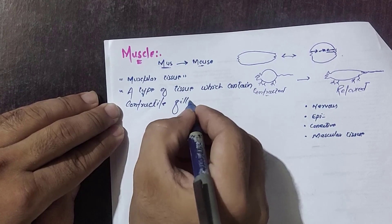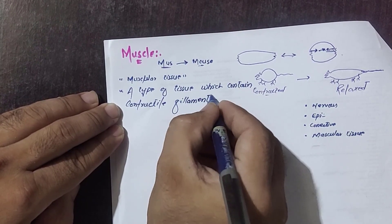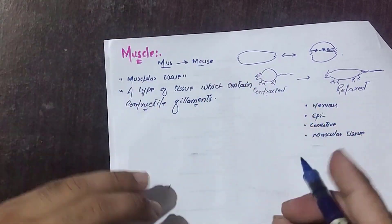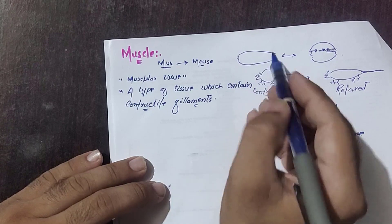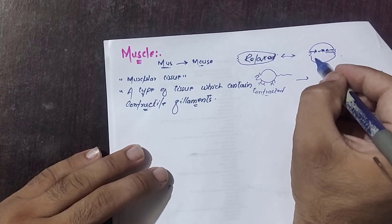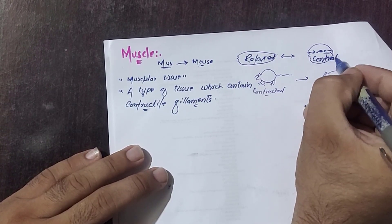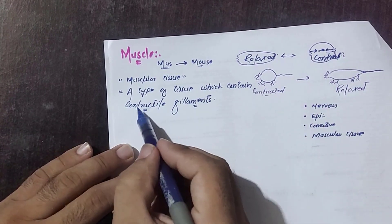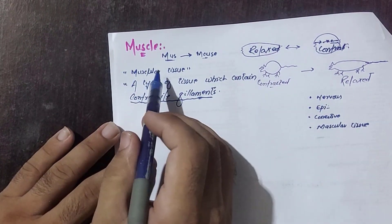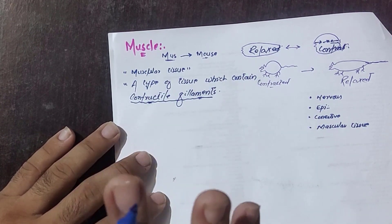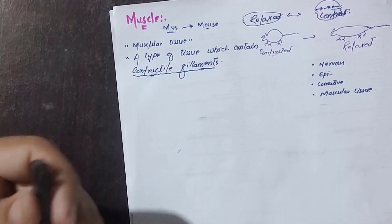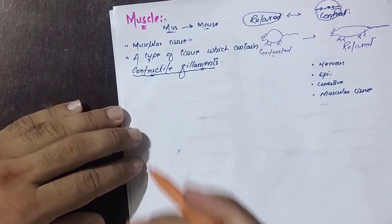Contractile filaments are protein fibers which show contraction and relaxation — they are motile. Muscles are relaxed at rest, and when needed they contract. This contraction and relaxation is because of these contractile filaments. So muscles are tissues in our body which contain contractile filaments.